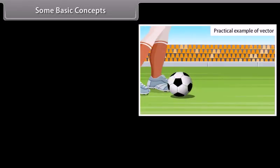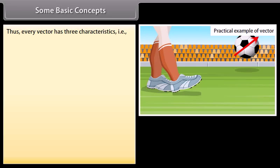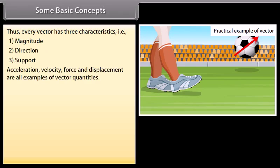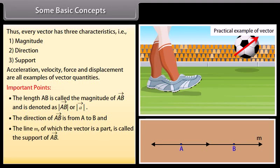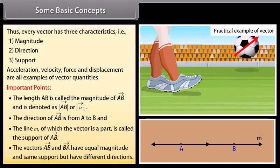Practical example of vector. Every vector has three characteristics. Acceleration, velocity, force, and displacement are all examples of vector quantities. The length AB is called the magnitude of vector AB and is denoted as mode of vector AB or mode of vector A. The direction of vector AB is from A to B. The line M of which the vector is a part is called the support of vector AB. Vectors AB and BA have equal magnitude and same support but have different directions.